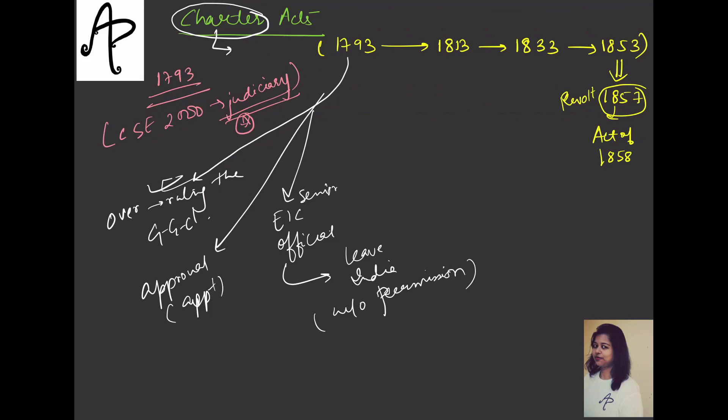One more thing that was done was that if we talk about appointment of Governor General or Commander in Chief, approval is needed - you need continuous royal approval. Also, if any senior EIC official leaves India without permission, they will be considered as resigned. It's not that you can just leave and go back to England and still be called an official there.